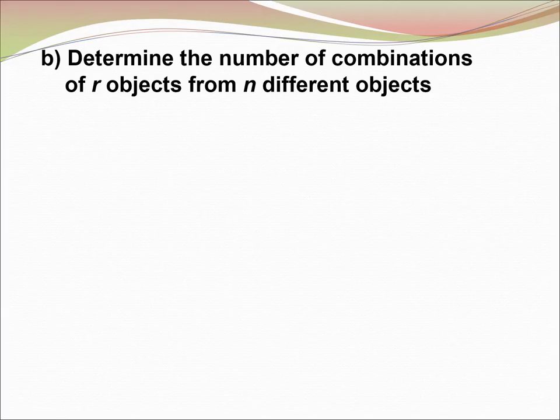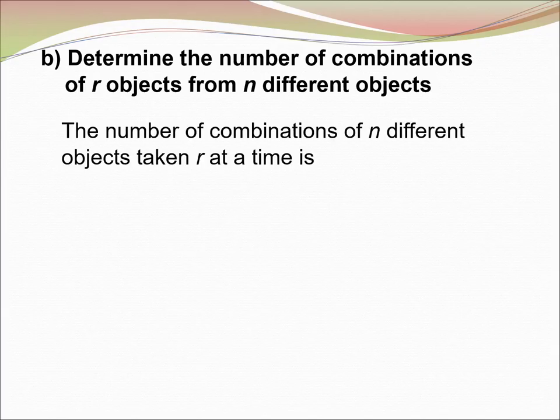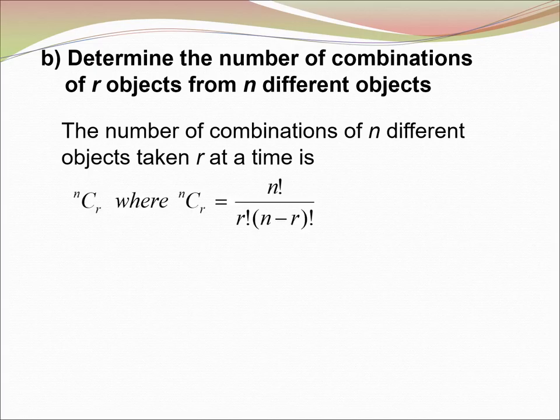(b) Determine the number of combinations of r objects from n different objects. The number of combinations of n different objects taken r at a time is nCr, where nCr is n factorial over r factorial times (n minus r) factorial.